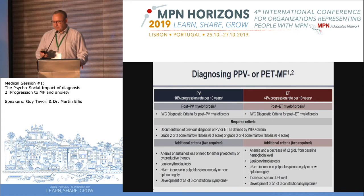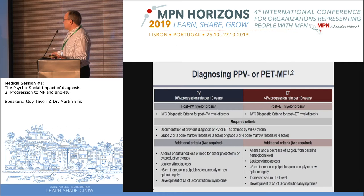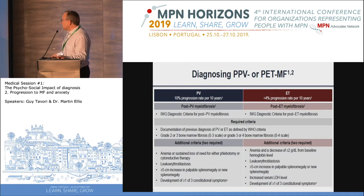In terms of defining progression, perhaps the best definitions are those offered by the International Working Group for MPN. In the left panel, polycythemia vera progresses to post-polycythemia vera myelofibrosis, and on the right-hand side, essential thrombocythemia progresses to post-essential thrombocythemia myelofibrosis. We have diagnostic criteria with required criteria — the first being that we must have an underlying disease, either PV or ET, as defined by WHO criteria.